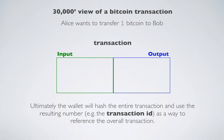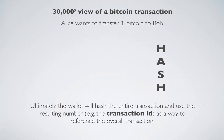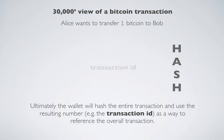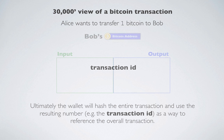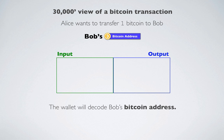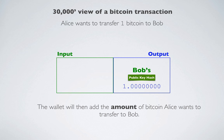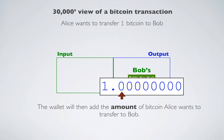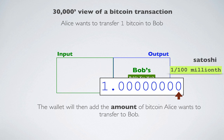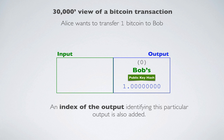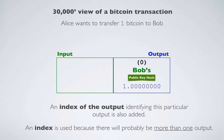The wallet will hash the entire transaction and use the resulting number as a way to identify the overall transaction, called the transaction ID. To construct the transaction, the wallet will decode the Bitcoin address provided by Bob, parsing out a hash version of his public key contained within the address and placing it in the output portion of the transaction. The wallet will then add the amount of Bitcoin specified by Alice to transfer to Bob. Note that Bitcoin can be divided down to eight decimal places, with the smallest unit being 1/100 millionth of a Bitcoin, known as a Satoshi. An index identifying this particular output is also added to the transaction output, because there will probably be more than one output.